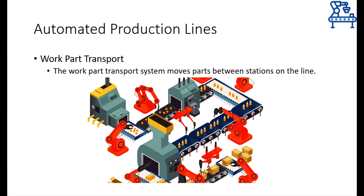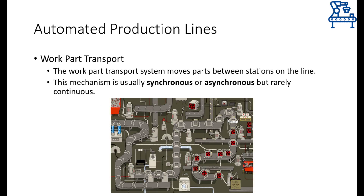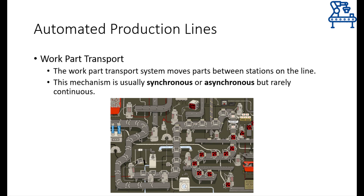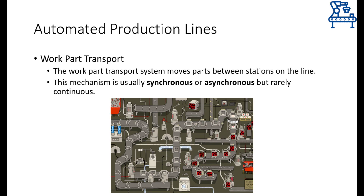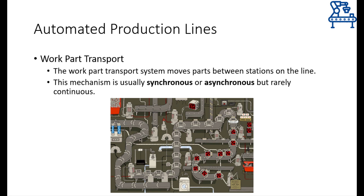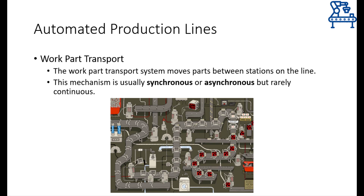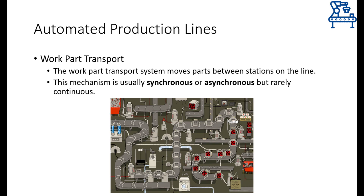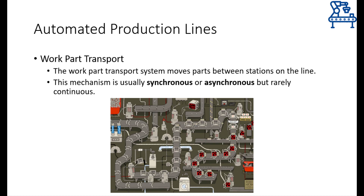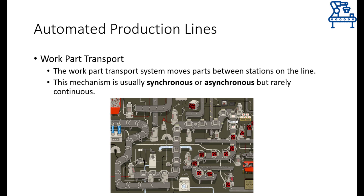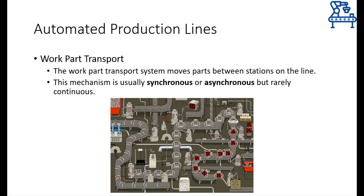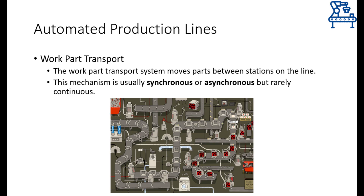It is a very valid and relevant question. The answer lies in the type of mechanism used for work transportation. Such mechanisms are sometimes synchronous while at others asynchronous. If all workstations require the same amount of time for processing a part, then all parts will move synchronously from one station to the other. There won't be any delay because as soon as a part is processed by the workstation, the next part is coming its way through an automated conveyor. While processing is being done on the part, the conveyor would be stationary so that no part can move from one station to the other.